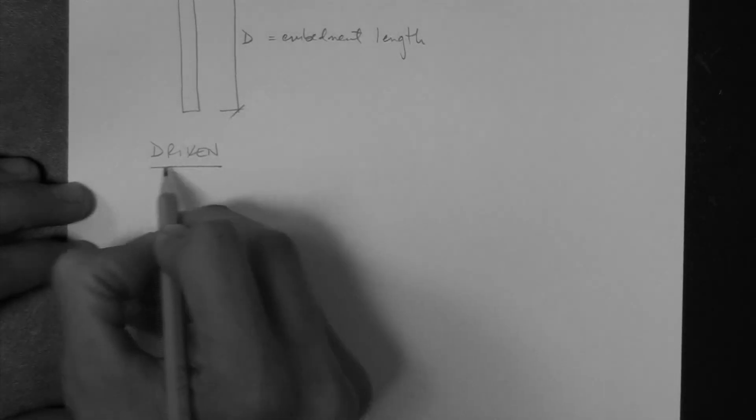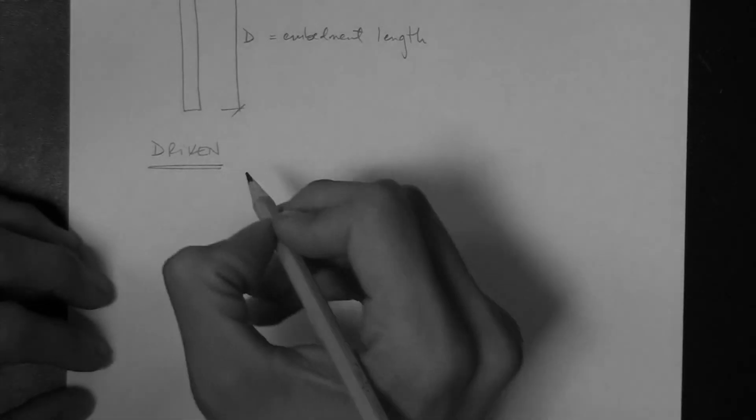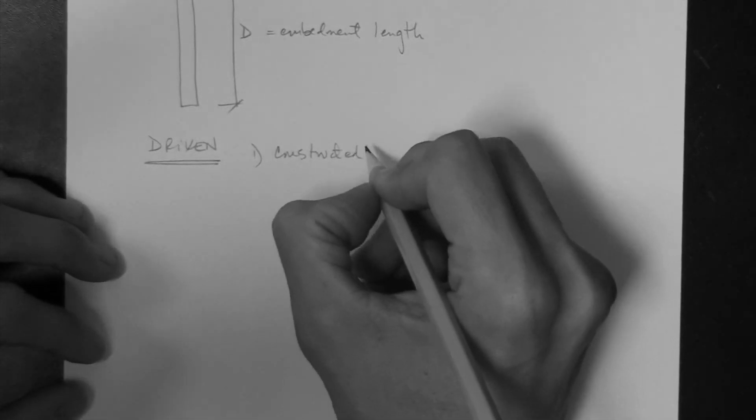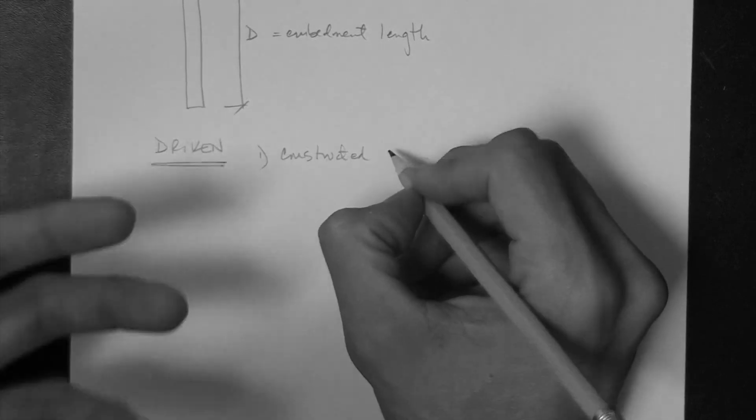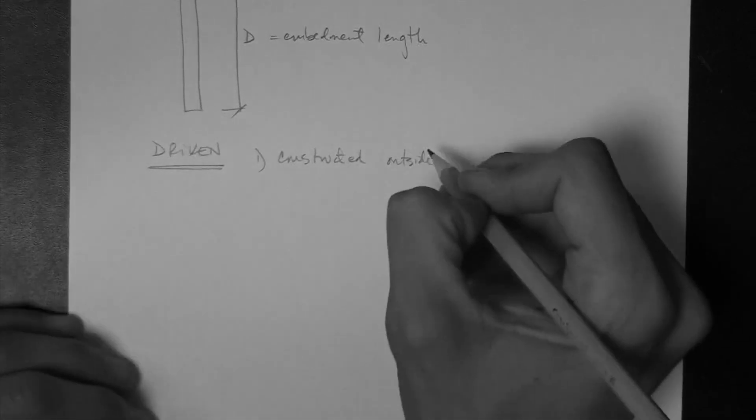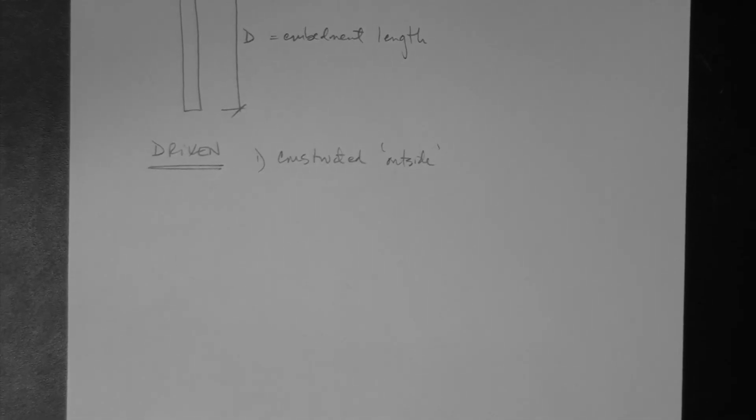So, a driven pile, this is, remember, this is very quick. There's a lot of stuff to read about this, the types of piles, and this is very general, but I think it's the fundamental stuff. A driven pile is constructed outside of the ground. So, basically, you could take, for example, a light post. Imagine a concrete light post.